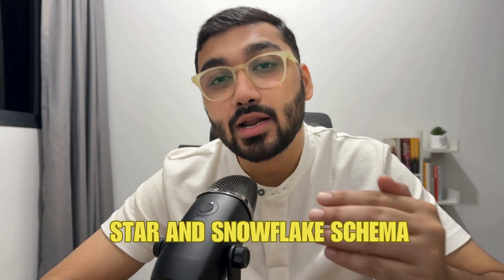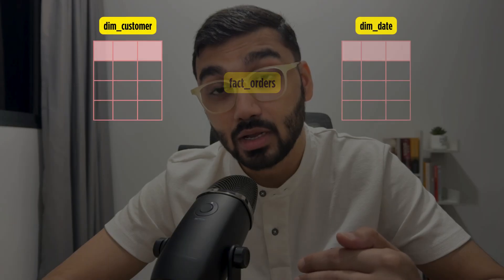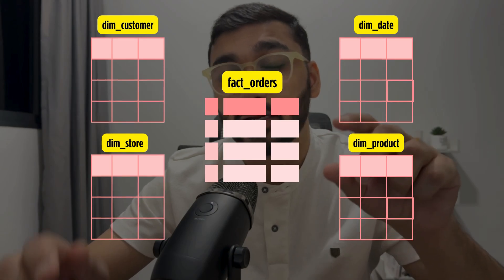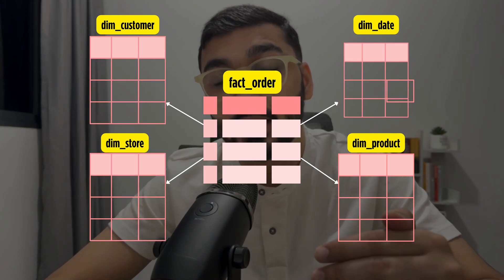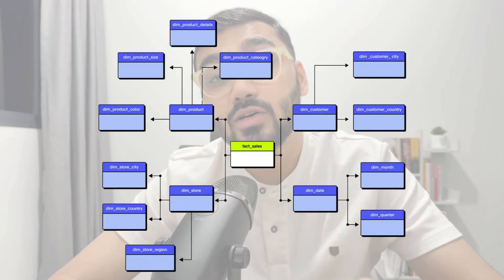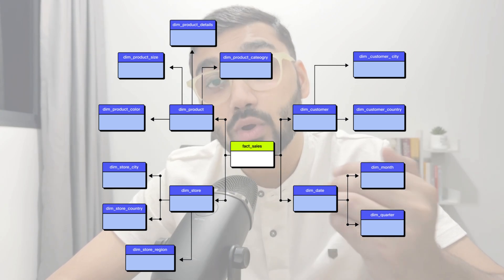A star schema has a central fact table surrounded by dimension tables. In the previous example, there was a central fact_orders table surrounded by four dim tables: dim_customer, dim_store, dim_date, and dim_product. The central fact table has foreign keys to all the dim tables so they can be joined and queried. A snowflake schema is almost the same as a star schema, except the dim tables are further normalized — broken down or branched out into additional tables.